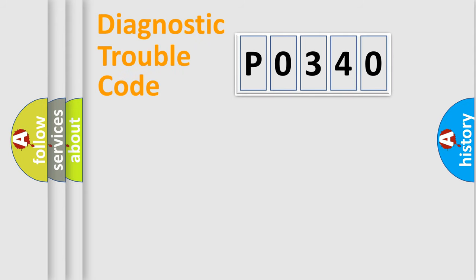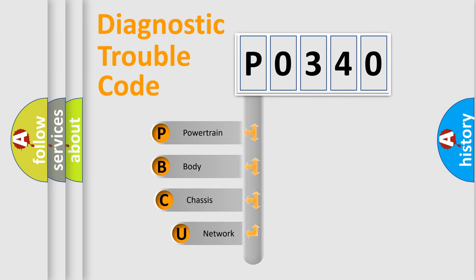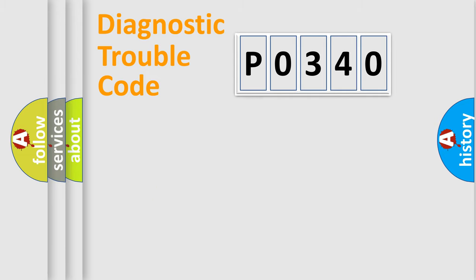Let's do this. First, let's look at the history of diagnostic fault code composition according to the OBD-II protocol, which is unified for all automakers since 2000. We divide the electric system of automobile into four basic units: Powertrain, Body, Chassis, and Network.